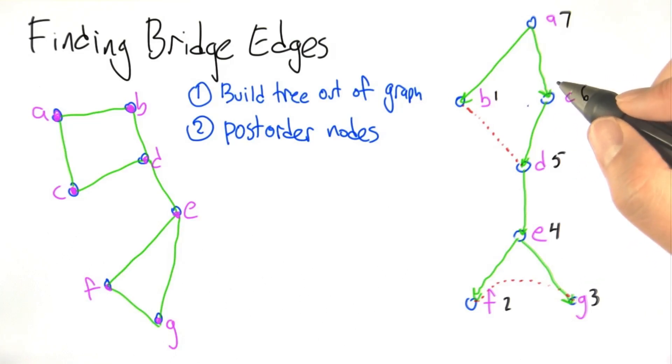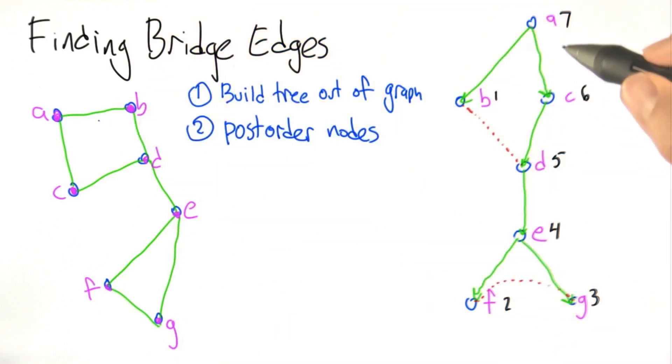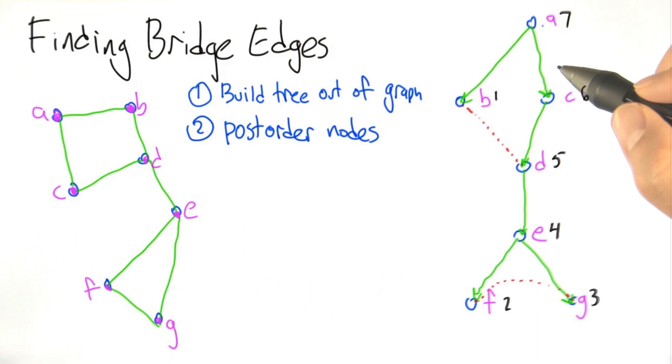I've redrawn the graph from the previous example just to make a little bit more room. What we've got so far is the original graph and the tree version of the graph that we built by search, some kind of either depth first, breadth first, any kind of search actually will do.